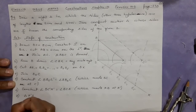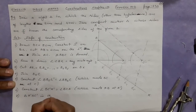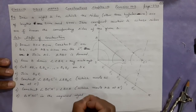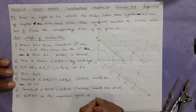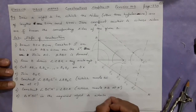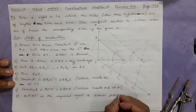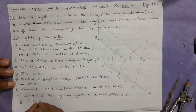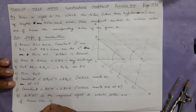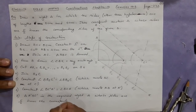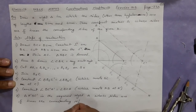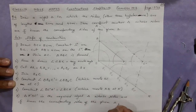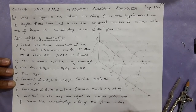Triangle A dash B C dash is the required right triangle whose sides are 5 by 3 times the corresponding sides of the given triangle ABC. Thank you.